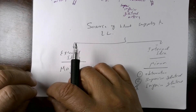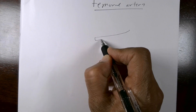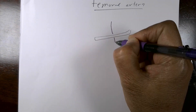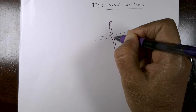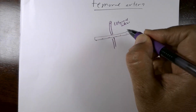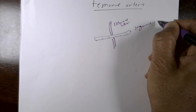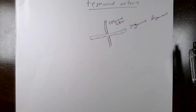Let us now talk about the primary source of blood supply of the lower extremity: the femoral artery. The femoral artery begins as a continuation of the external iliac artery, passing into the thigh. Here is the external iliac artery, here is the femoral artery, and this is the inguinal ligament.